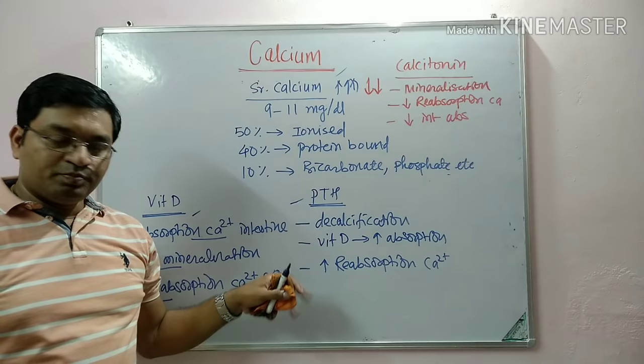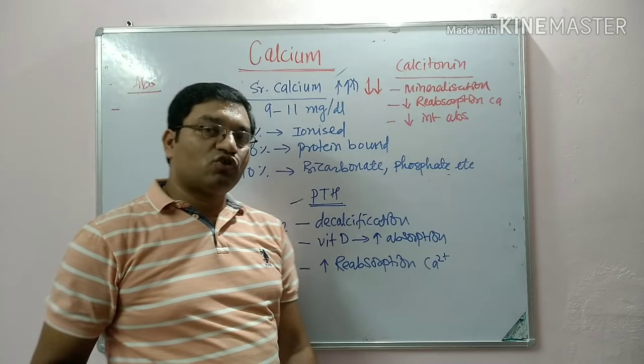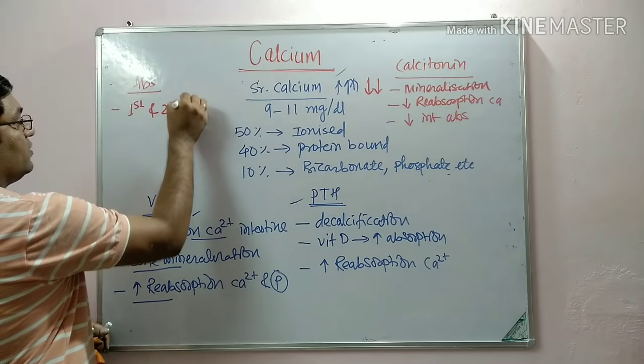Absorption of calcium occurs against the concentration gradient with the utilization of energy, from the first and second part of the duodenum.